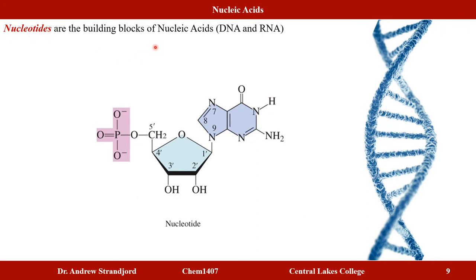Nucleotides are the building blocks of nucleic acids for both DNA and RNA. To identify whether a nucleotide is for RNA or DNA, look at the 2'-carbon of the sugar. If it has a hydroxyl group, it is an RNA nucleotide. For example, a nucleotide showing adenine with a hydroxyl at the 2'-carbon is an RNA nucleotide.